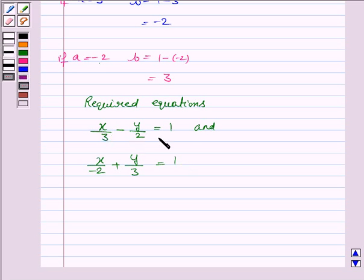Now simplifying this equation taking LCM, the first equation becomes 2x minus 3y is equal to 6. And simplifying second equation and taking LCM, this equation becomes minus 3x plus 2y is equal to 6.